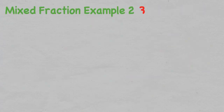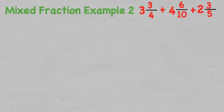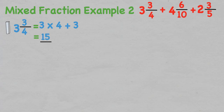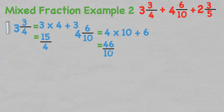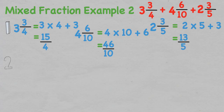If we look at an example with three mixed fractions — 3 and 3 over 4, plus 4 and 6 over 10, plus 2 and 3 over 5 — we need to change all the mixed fractions into improper fractions. For 3 and 3 over 4: multiply the whole number by the denominator and add the numerator, which gives 15 over 4. For 4 and 6 over 10: multiply 4 by 10 and add 6, giving 46 over 10. For 2 and 3 over 5: multiply 2 by 5 and add 3, giving 13 over 5. We now have 15 over 4, plus 46 over 10, plus 13 over 5.